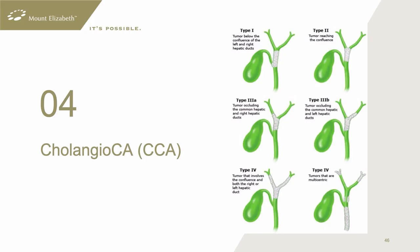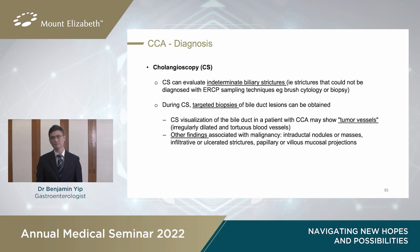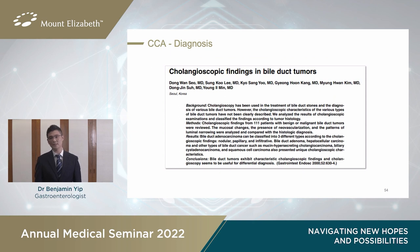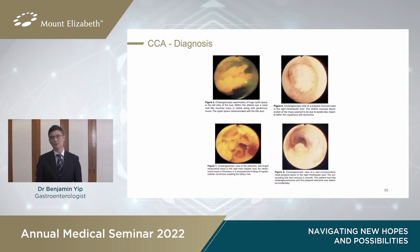I won't dwell too much on cholangiocarcinoma. For this interesting study, the Korean authors studied 111 patients with biliary tumours, both benign and malignant. A picture on the top left shows a nodular mass, the top right shows smooth narrow tapering, the bottom left shows a papillary mucosal projection, and the bottom right shows a villous mucosal projection. Further pictures show a coral-reef-like mucosal mass, an intraluminal mass, a polypoid mucosal mass, and small polypoid lesions. With direct visualised biopsies, all these turned out to be cholangiocarcinoma.